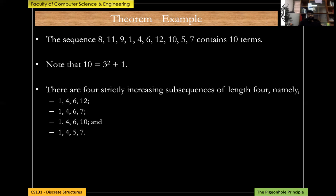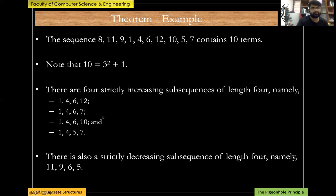Indeed, there are four strictly increasing subsequences of length 4: 1,4,6,12; 1,4,6,7; 1,4,6,10; and 1,4,5,7. There is also a strictly decreasing subsequence of length 4: 11, 9, 6, 5. The theorem holds for this example.